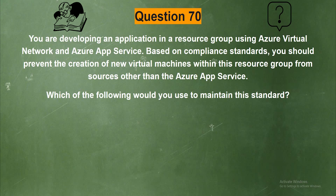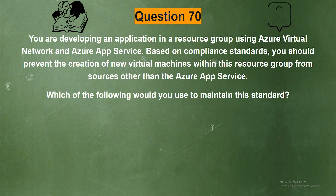Question 70. You are developing an application in a resource group using Azure Virtual Network and Azure App Service. Based on compliance standards, you should prevent the creation of new virtual machines within this resource group from sources other than Azure App Services. Which of the following would you use to maintain this standard? The options are: Option 1, Azure Policy; Option 2, Role; Option 3, Tag; Option 4, Lock.